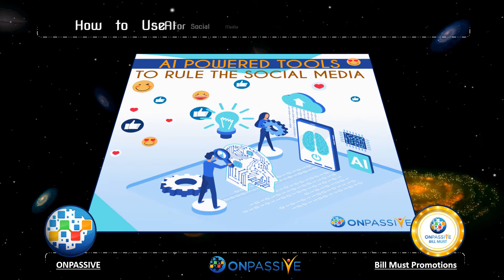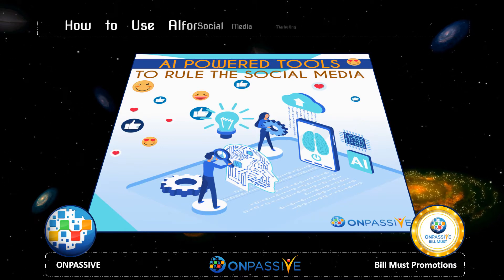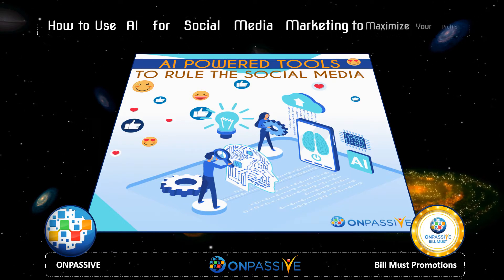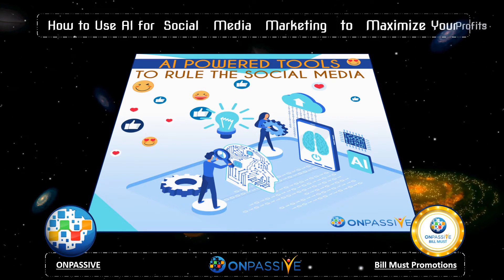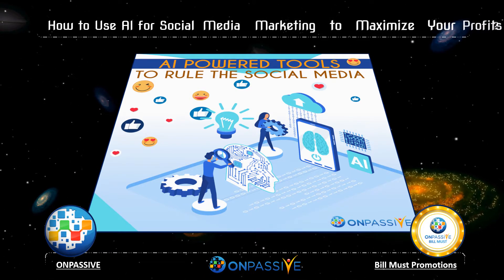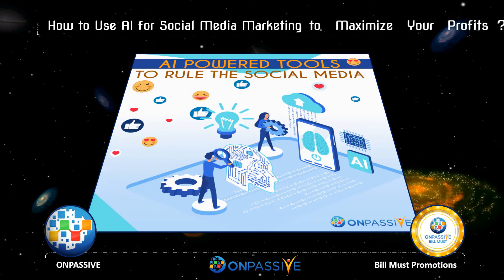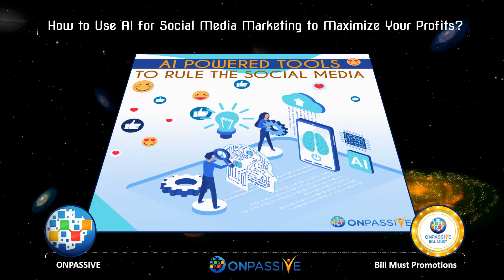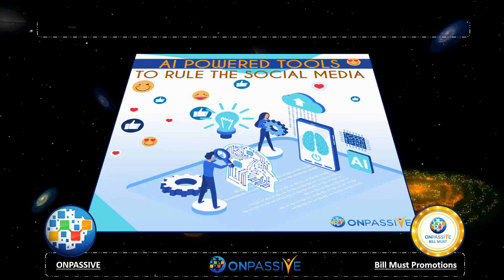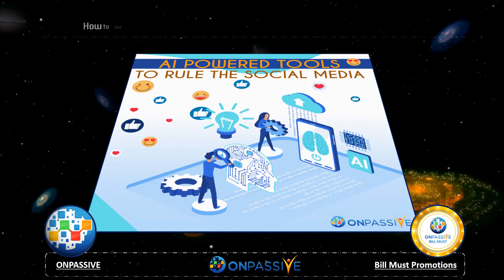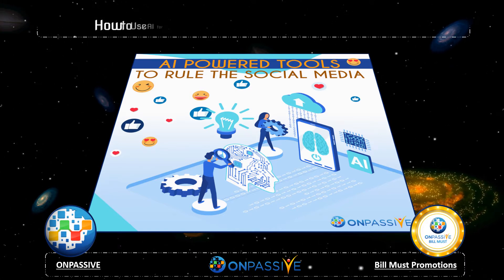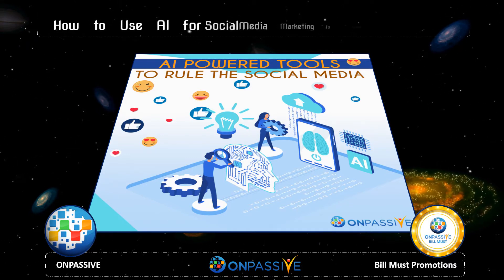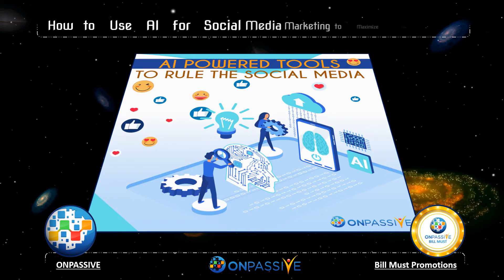We live in an era where the information that we are looking for is just a click away. If we are inspired and want to share our thoughts, AI for social media plays a key role. Most of us are addicted to multiple social platforms such as Twitter, Facebook, YouTube, Instagram, etc. Not being connected is seen as being the odd one out.